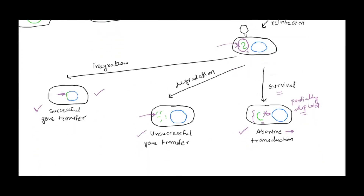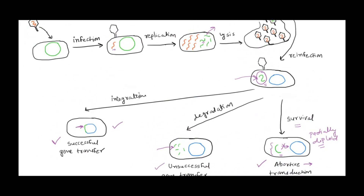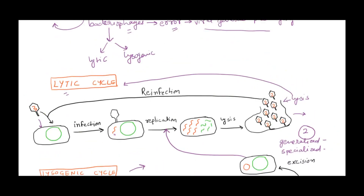There is one very important difference between transformation and transduction. In transformation, a naked piece of DNA is taken up by a cell — always a single strand of DNA, since one strand is degraded. In transduction, when a gene is transferred through a virus, it is always double-stranded DNA that is transferred and gets integrated. That is very important to remember.